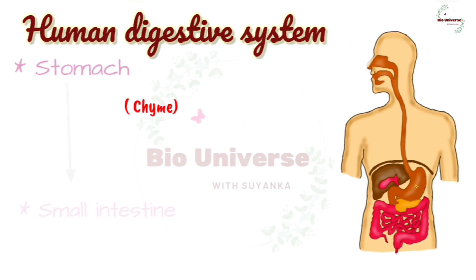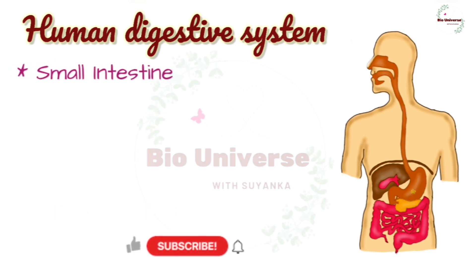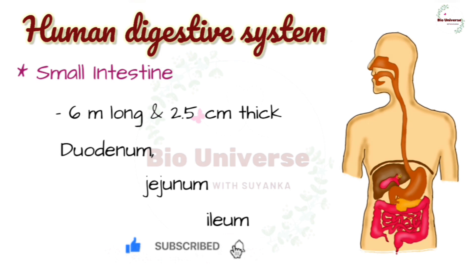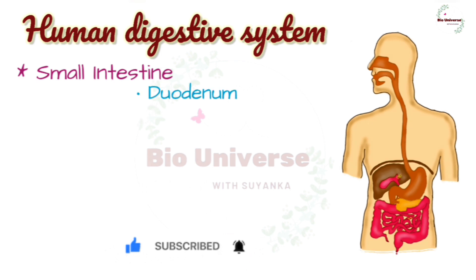Digested food present in the stomach is called chyme, which moves to the small intestine. The small intestine is about 6 meters in length and 2.5 centimeters in thickness. There are three divisions of the small intestine: duodenum, jejunum, and ileum. The duodenum is the first part, which begins from the pyloric stomach and is C-shaped. In the middle of the duodenum, two different ducts open through a common aperture — the common bile duct and the pancreatic duct.